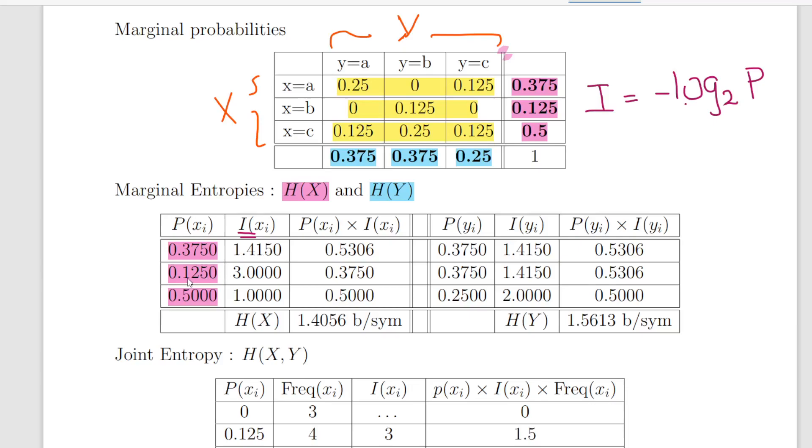Likewise, the minus log to the base 2 of 0.1250 is 3 and for 0.50 the information is 1. So the entropy is simply the sum of the probabilities times the information. So essentially what I'm going to do is multiply the numbers here. I'm going to multiply this number here by that number there and I should get 0.5306.